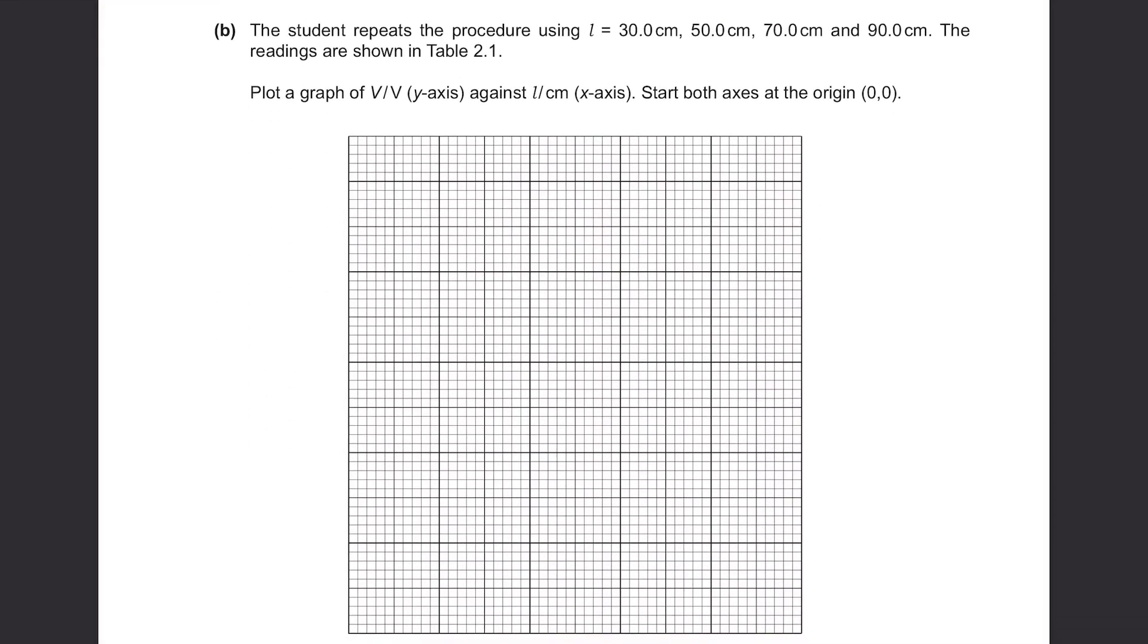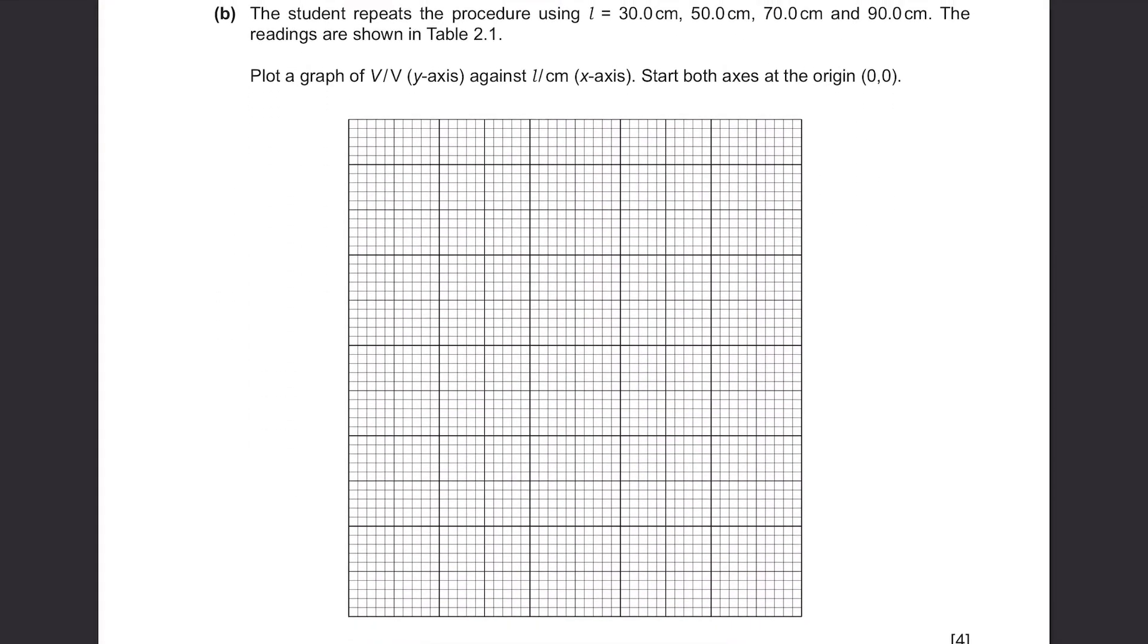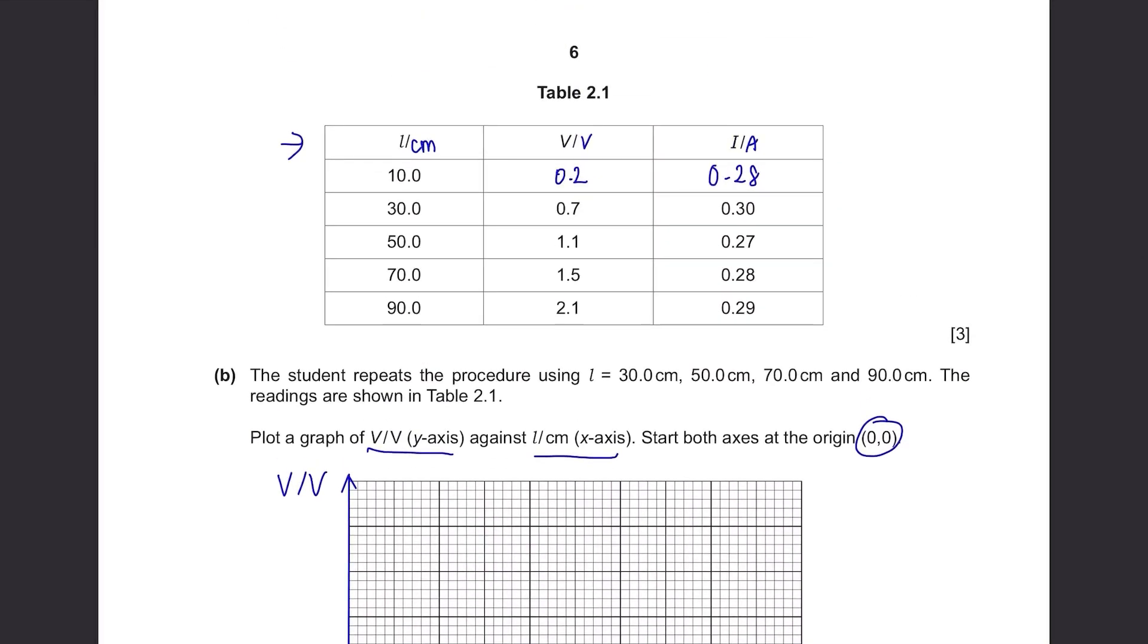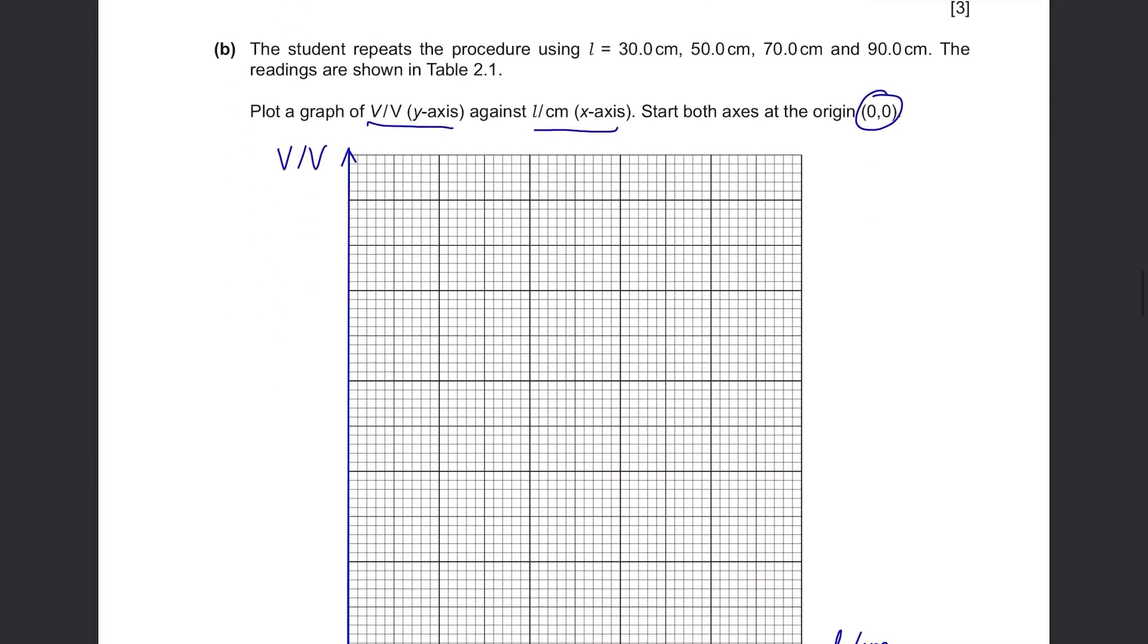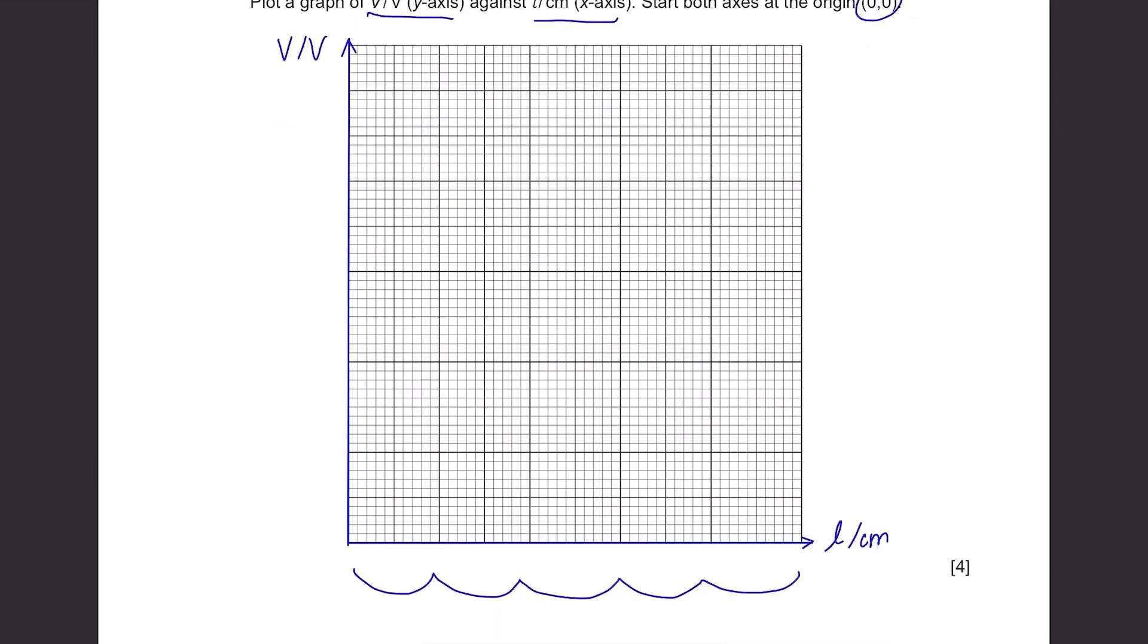Part B. The student repeats the procedure using L equals 30 cm, 50 cm, 70 cm and 90 cm. The readings are shown in table 2.1. Plot the graph of V y-axis against L x-axis. Start both axes at the origin. They have told us which ones are in x and y-axis so let's put those first. Now we have to scale the graph. For x-axis, we need to plot from 10 to 90 and we have 5 big boxes so let's set 1 big box as 20. It's from 0 to 100.